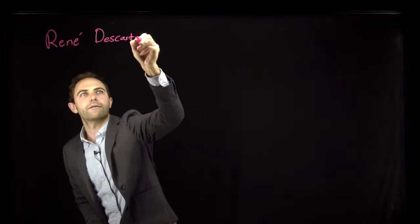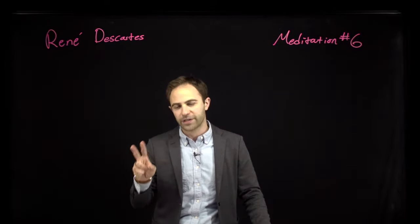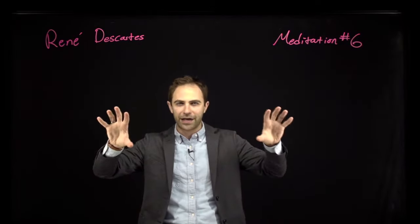This video is about the sixth and final of Descartes' meditations. There are two major things that happen in this meditation. The first is that Descartes finally gets around to proving that the external physical world — the world of tables and chairs and mountains and molecules, all that stuff outside of his own mind — exists. The other thing he does is offer two arguments for the distinctness of the mind and the body.